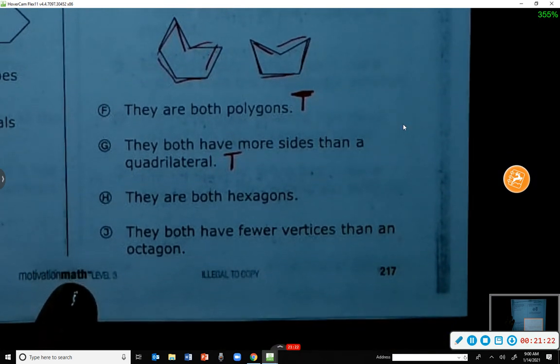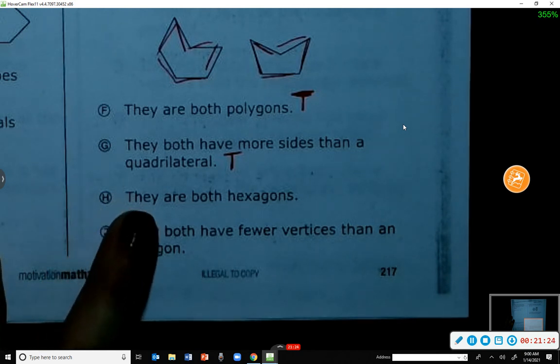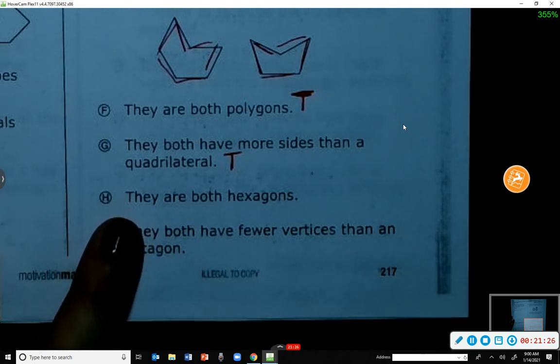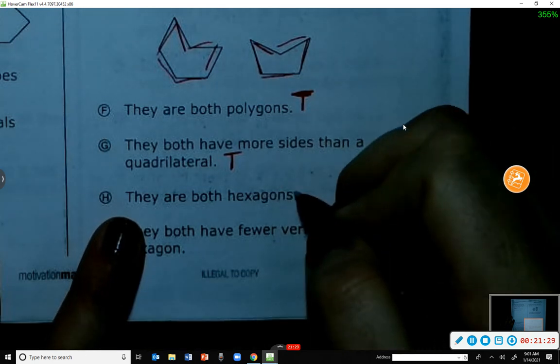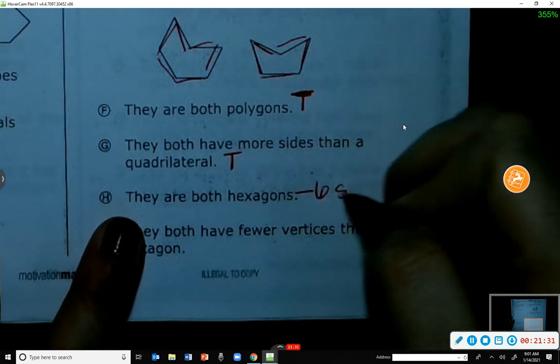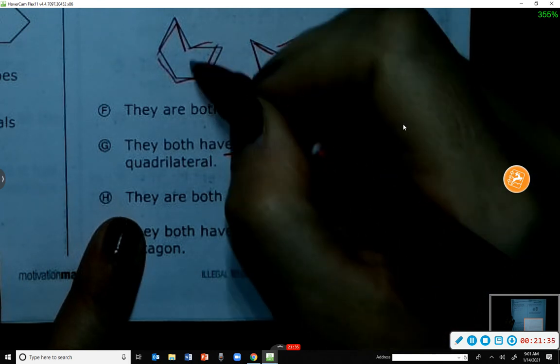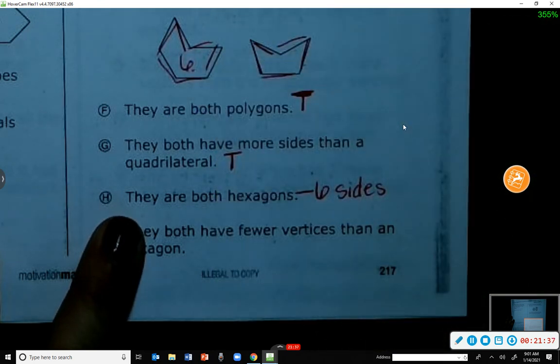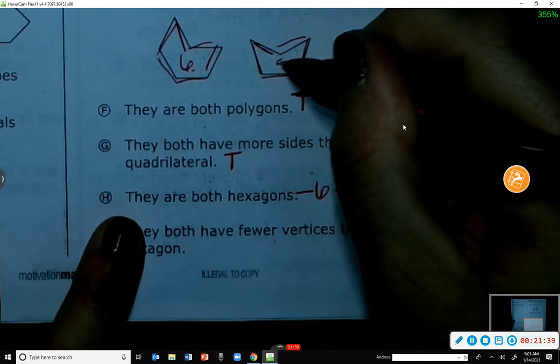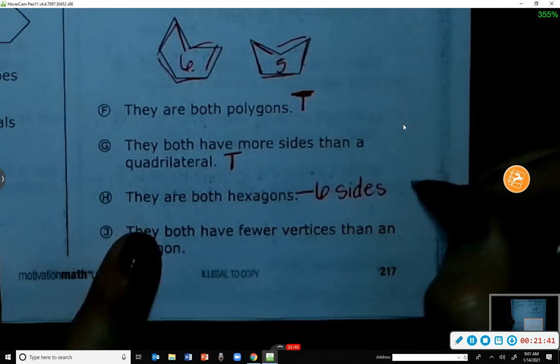H: They are both hexagons. Well, a hexagon has six sides, right? This one had six. Did this one? No. That had five. So this is not true.